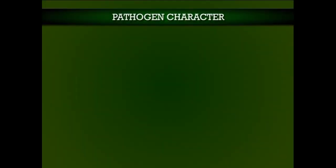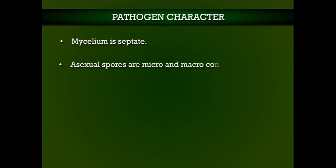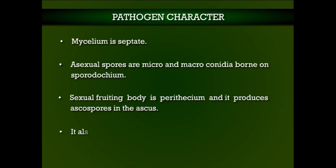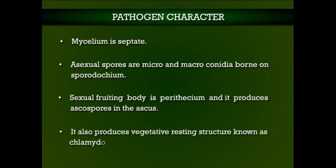Character of the pathogen: Mycelium is septate. Asexual spores are micro- and macroconidia born on sporodochia. The sexual fruiting body is perithecia, which produces ascospores in the asci. It also produces a vegetative resting structure known as chlamydospores.